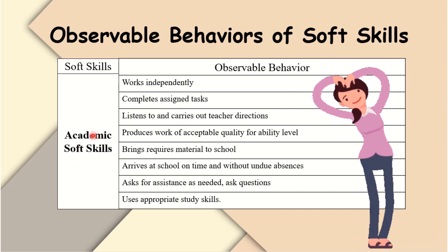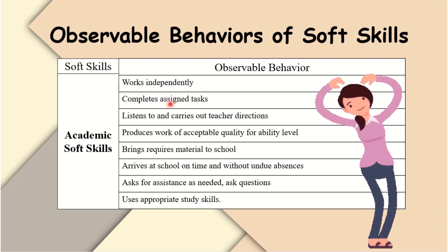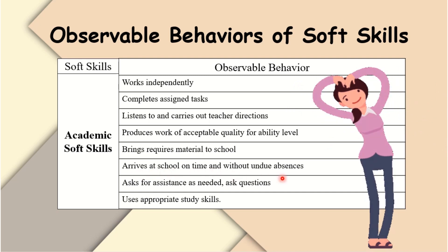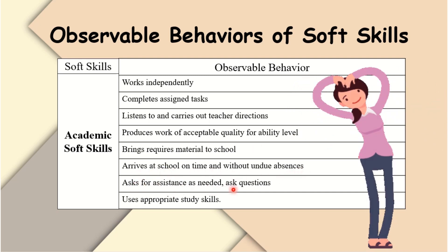Academic soft skills observable behaviors include: works independently; completes assigned tasks; listens to and carries out teacher directions; produces work of acceptable quality for ability level; brings required materials to school; arrives at school on time and without undue absences; asks for assistance as needed; and uses appropriate study skills.